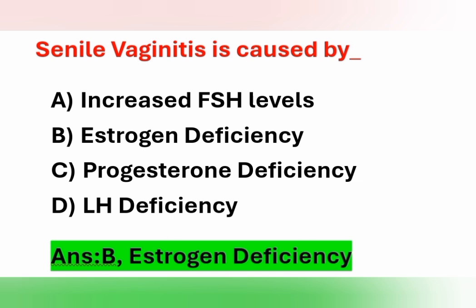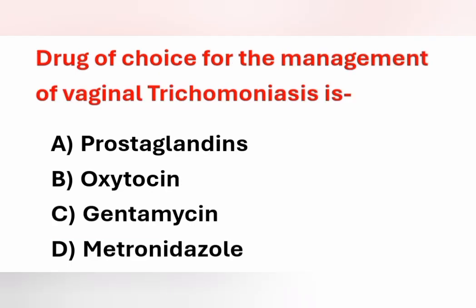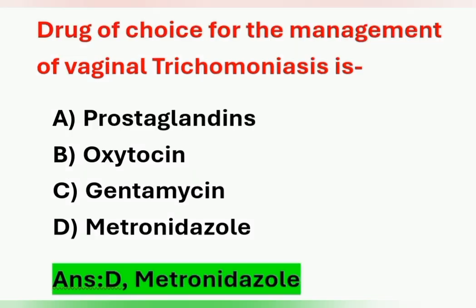Next question: the drug of choice for the management of vaginal trichomoniasis is? Options: A) Prostaglandins, B) Oxytocin, C) Gentamicin, D) Metronidazole. Vaginal trichomoniasis causes vaginitis, and the drug of choice is metronidazole. Option D is the correct answer.